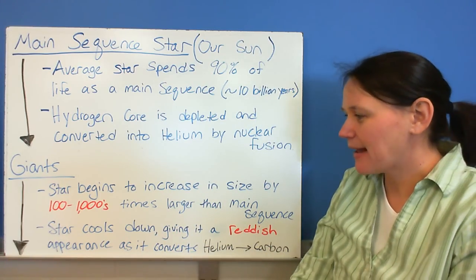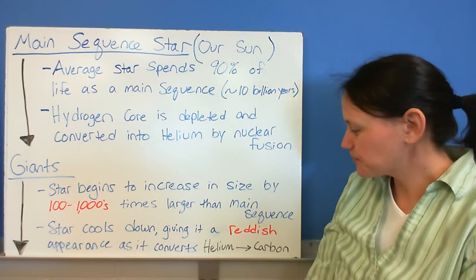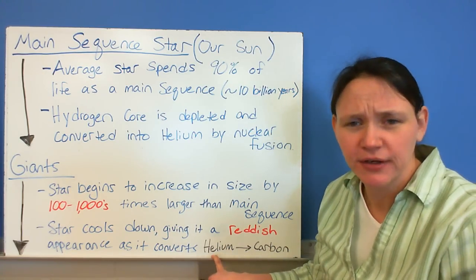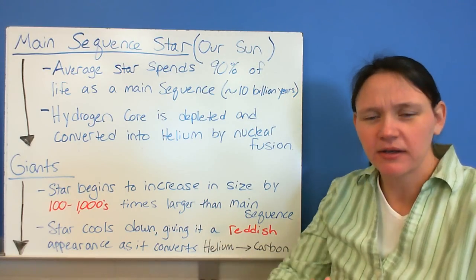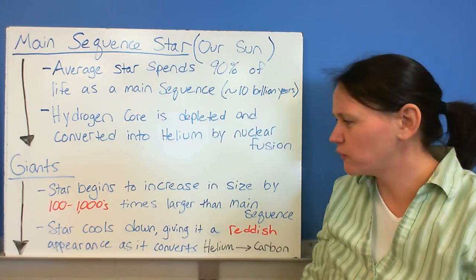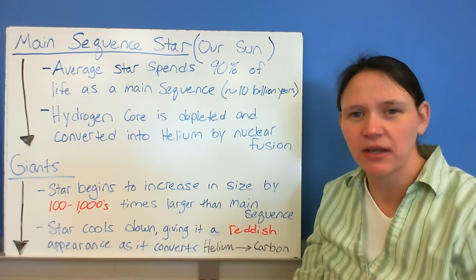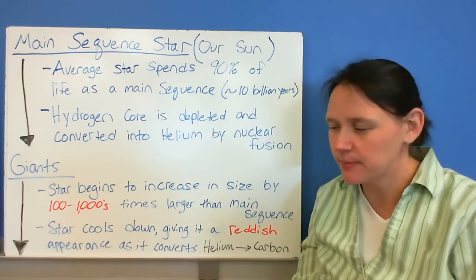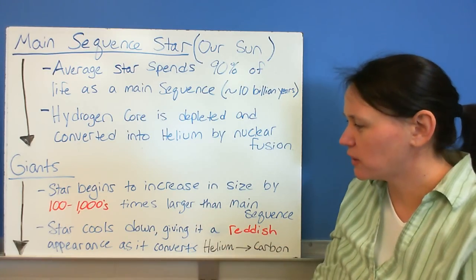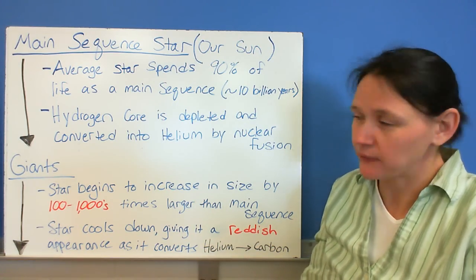Also during this time, because you're running out of that energy, the hydrogen, you end up having helium that's left over. And the helium starts converting into the carbon, and that's part of why it's getting so much larger. But it also is cooling down the star as well, giving it a reddish color. And we'll talk more about colors and stars in a minute. But the redder stars are actually a little bit cooler, or a lot cooler actually, than the blue stars that we see.